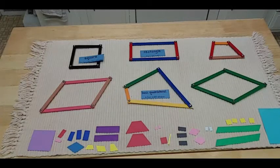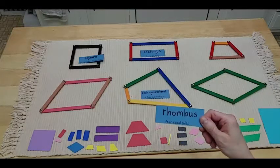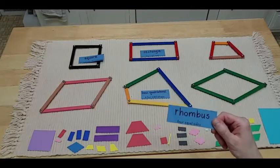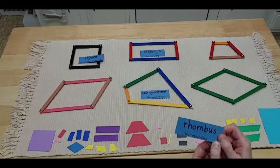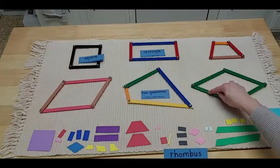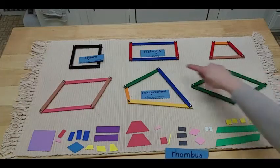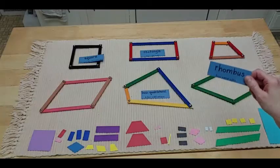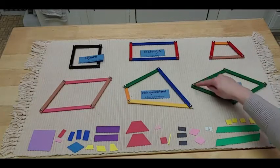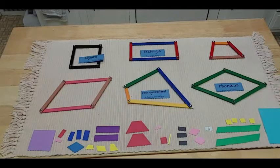This next shape is called a rhombus. It has four equal sides. They're all the same. The only difference is they're a bit slanted. So I can tell, because these are all the same color and a bit slanted compared to my square, that this is a rhombus. It also kind of reminds me of a diamond shape. Rhombus.